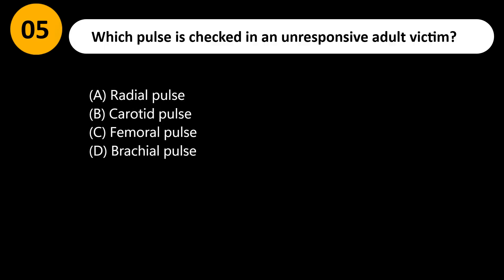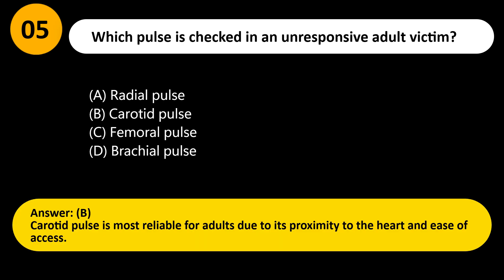Which pulse is checked in an unresponsive adult victim? A) Radial pulse, B) Carotid pulse, C) Femoral pulse, D) Brachial pulse. Answer: B. Carotid pulse is most reliable for adults due to its proximity to the heart and ease of access.